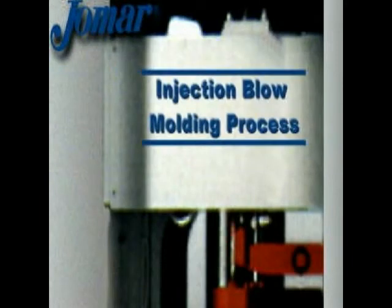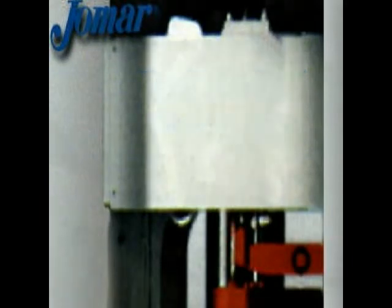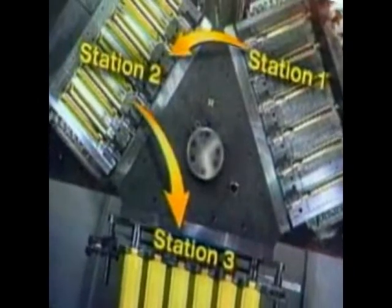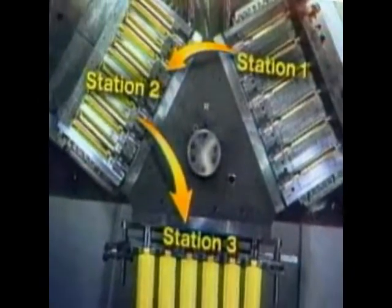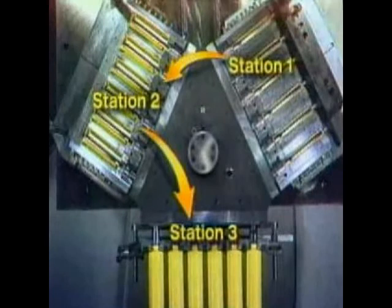The heart of the injection blow molding process is a triangular rotary table that indexes in 120 degree steps. Core rods mounted on the face of the table form the inside of the hot preform, which is later blown into the finished container.